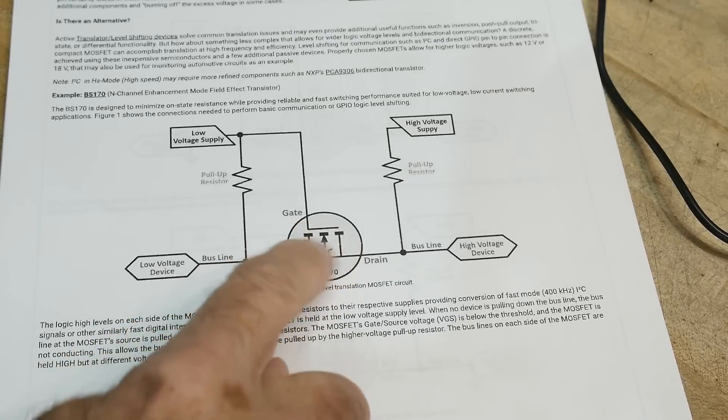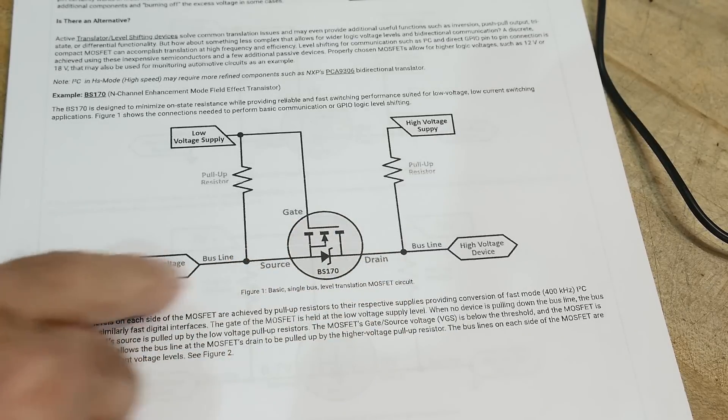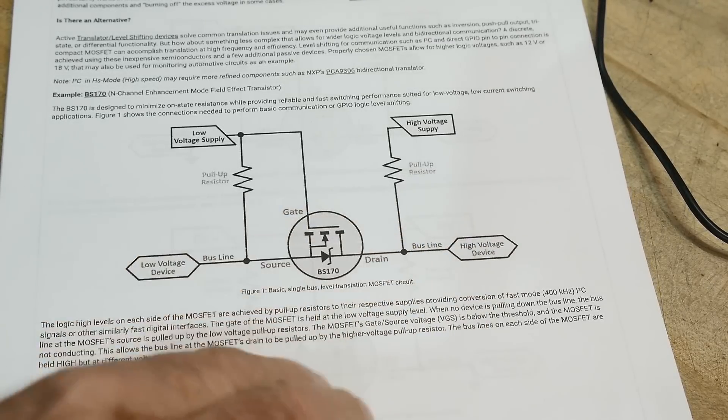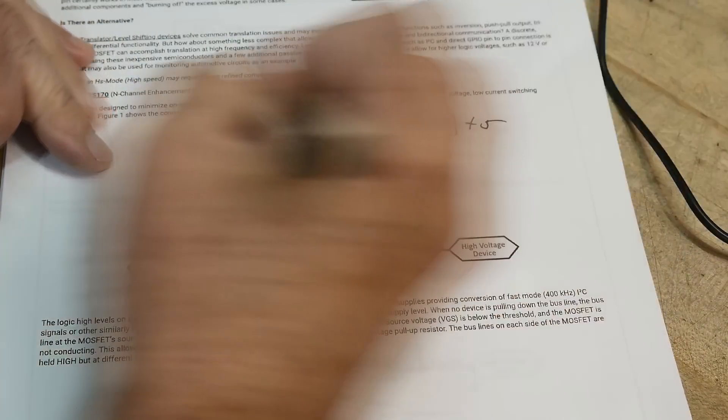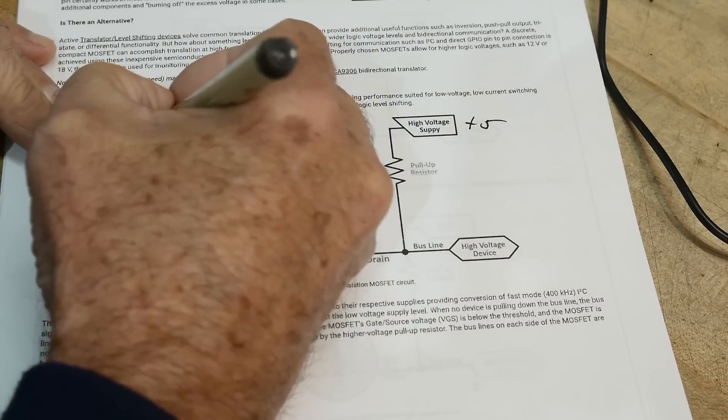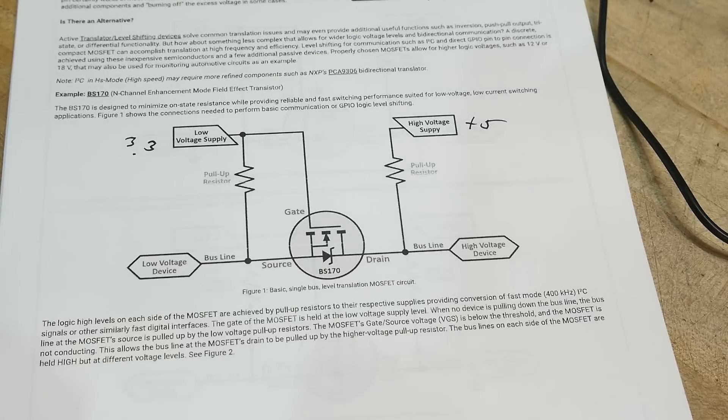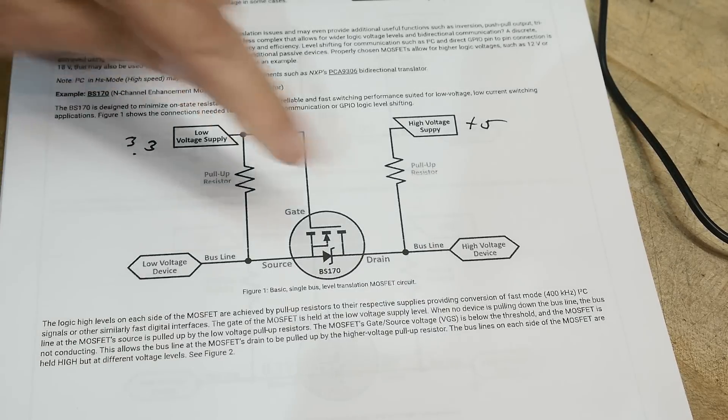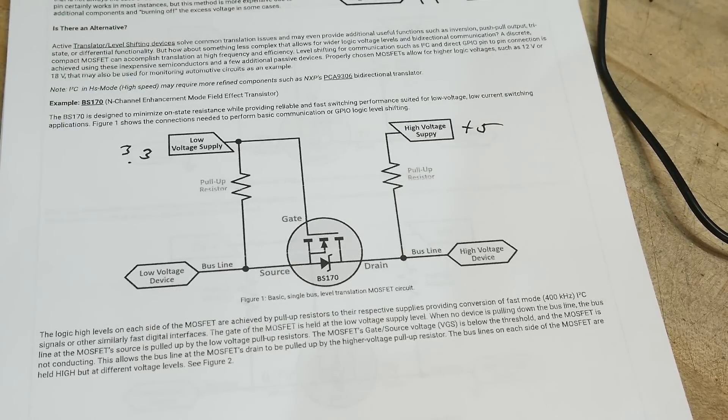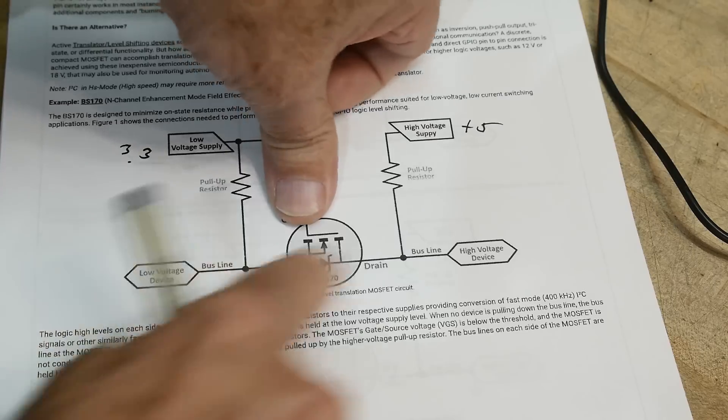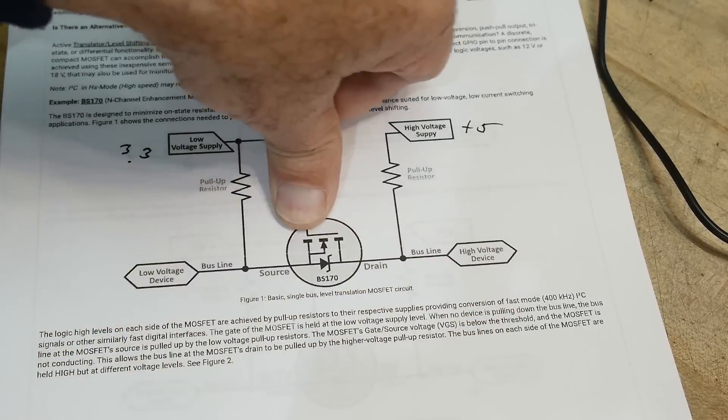We have an FET, and then we have a low-voltage side and a high-voltage side. So this is 5, and this will be our 3.3-volt side. And then we have this FET here. If the FET is on, then things can go back and forth either direction.